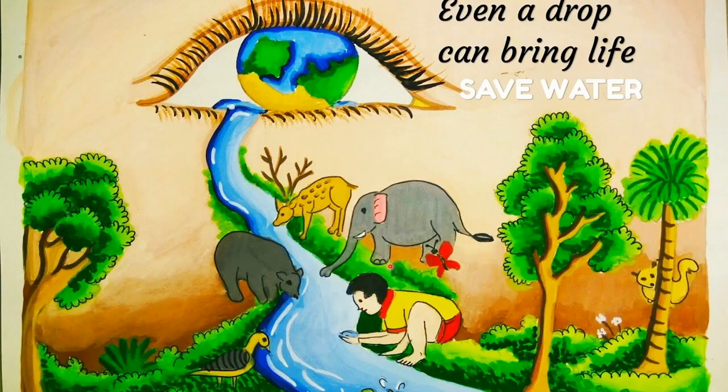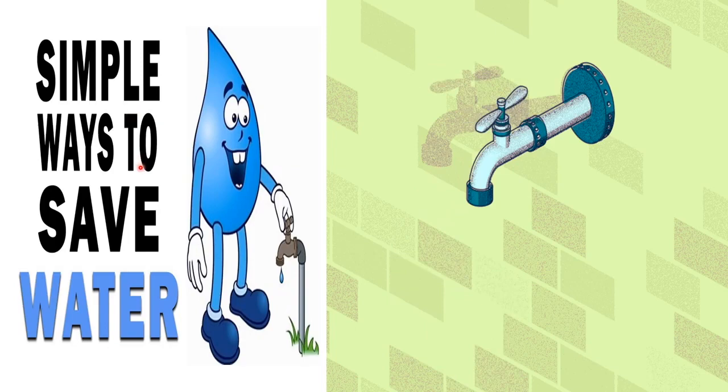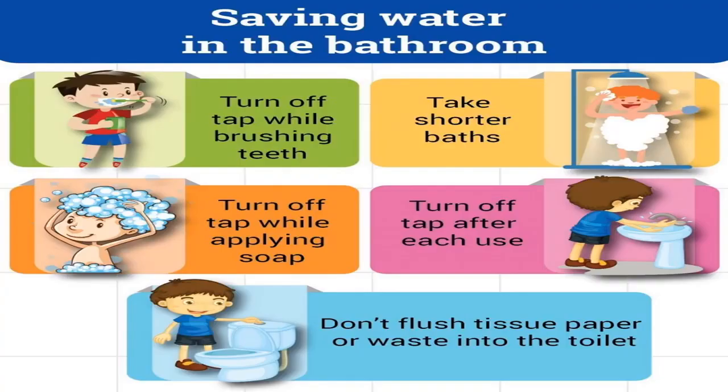Let's learn some simple ways to save water. Saving water in the bathroom: turn off the tap while brushing teeth, take shorter baths, turn off the tap while applying soap, turn off the tap after each use, and do not flush tissue paper or waste into the toilet.